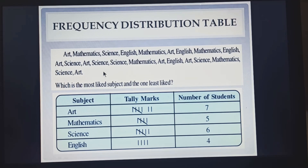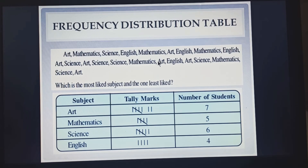In the subject column we will write all the subjects mentioned: arts, maths, science, and english. Now you see here first we are having arts, so we have marked one tally. Then second we are having maths, so we will mark one line in tally. Similarly you are going to do all the entries of tally marks in this column. Then you will count how many lines you have got, and that will be the frequency.